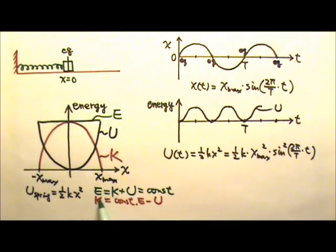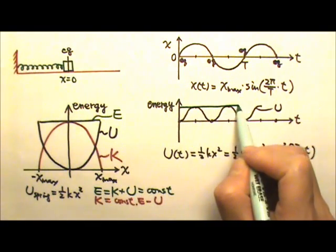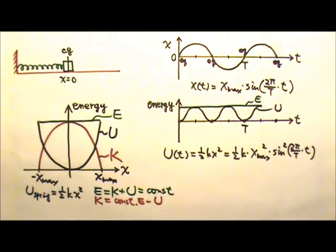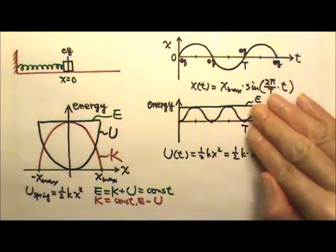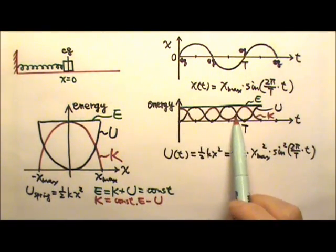As for the total mechanical energy, it is still a constant, so the total mechanical energy graph is still a horizontal line. And because the total mechanical energy equals K plus U, which is a constant, the kinetic energy is still the constant total mechanical energy minus the potential energy — so it again is the flip of the potential energy. The kinetic energy K looks like this.